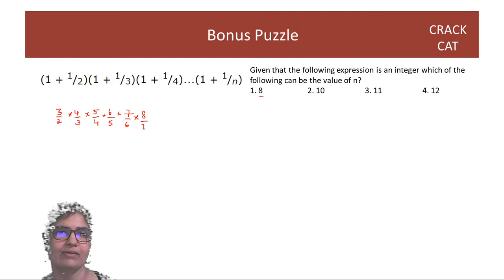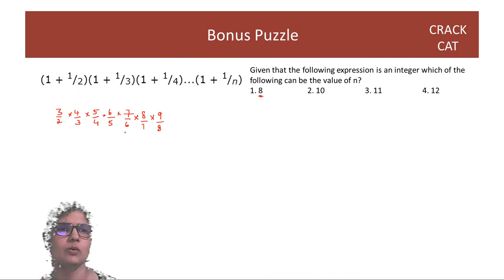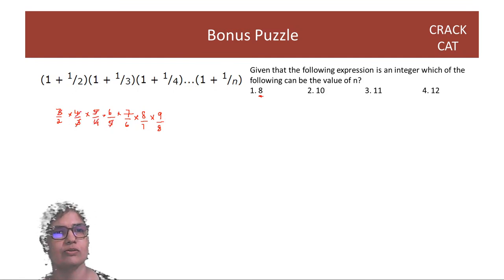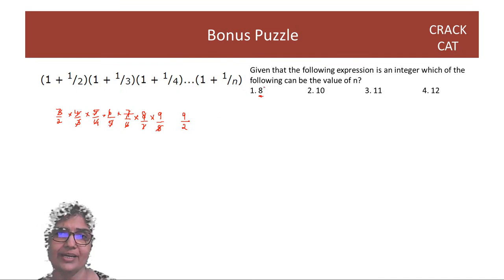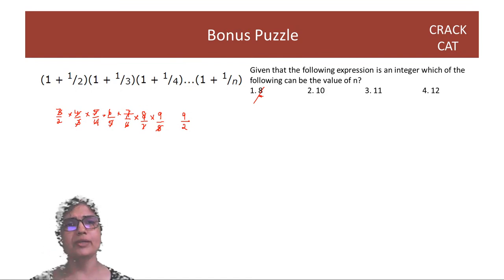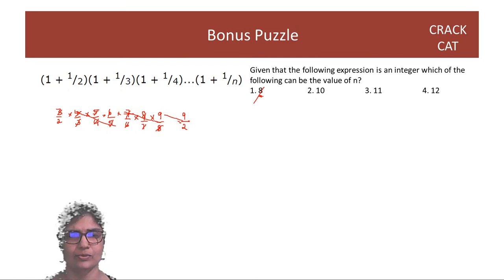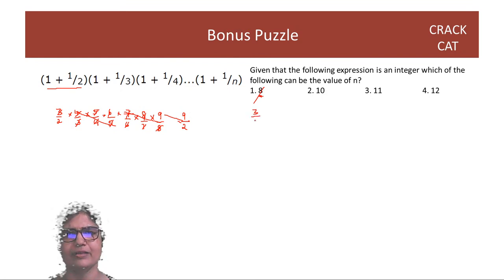Everything cancels off except the last term, leaving you with 9/2, which is not an integer. So for n=8 it's not an integer. What you can realize without doing all this is: the denominator will always leave a 2, and the numerator will be the last number (n+1). So if that last number is even, you can cancel the 2; if it's odd, you cannot.